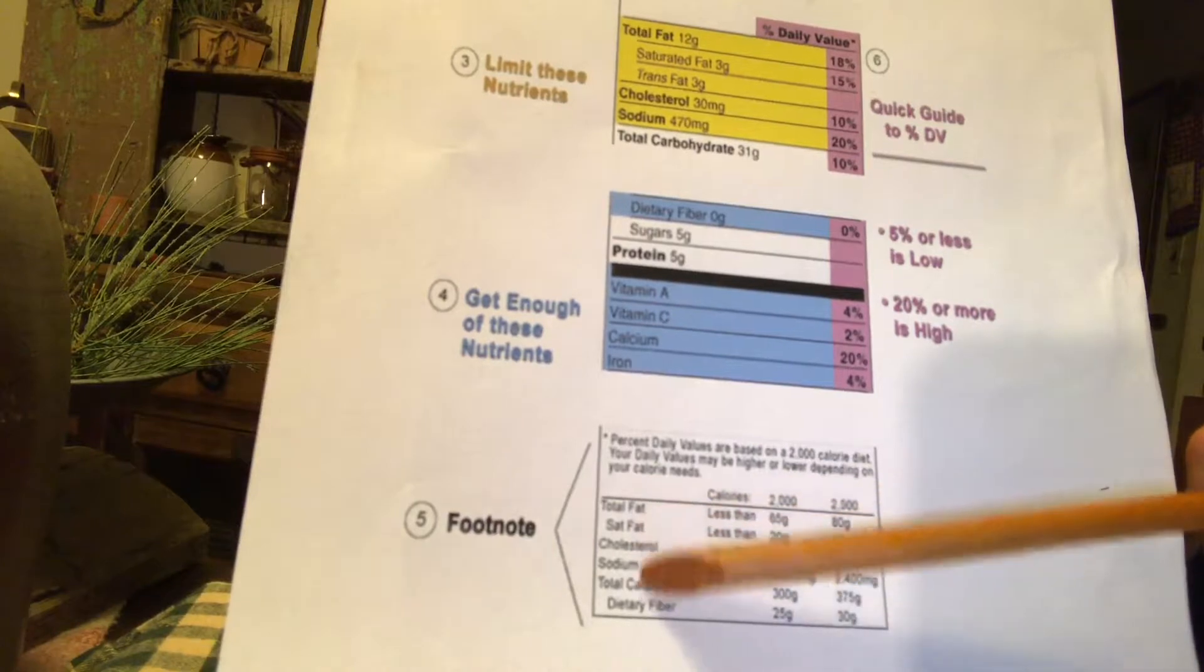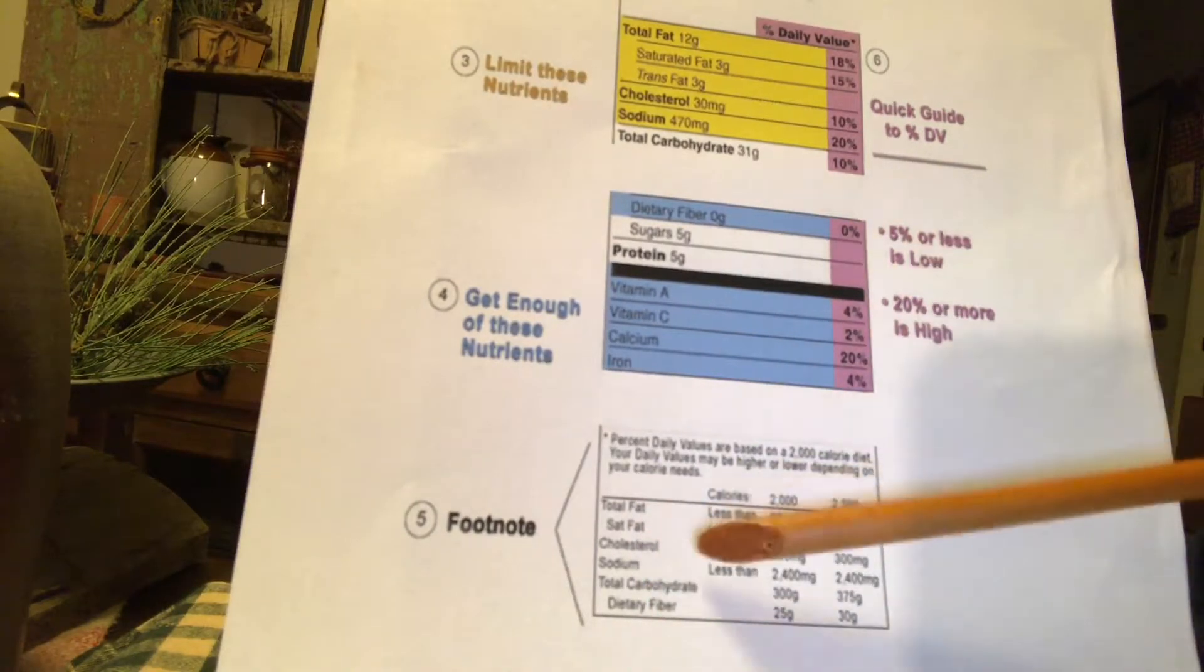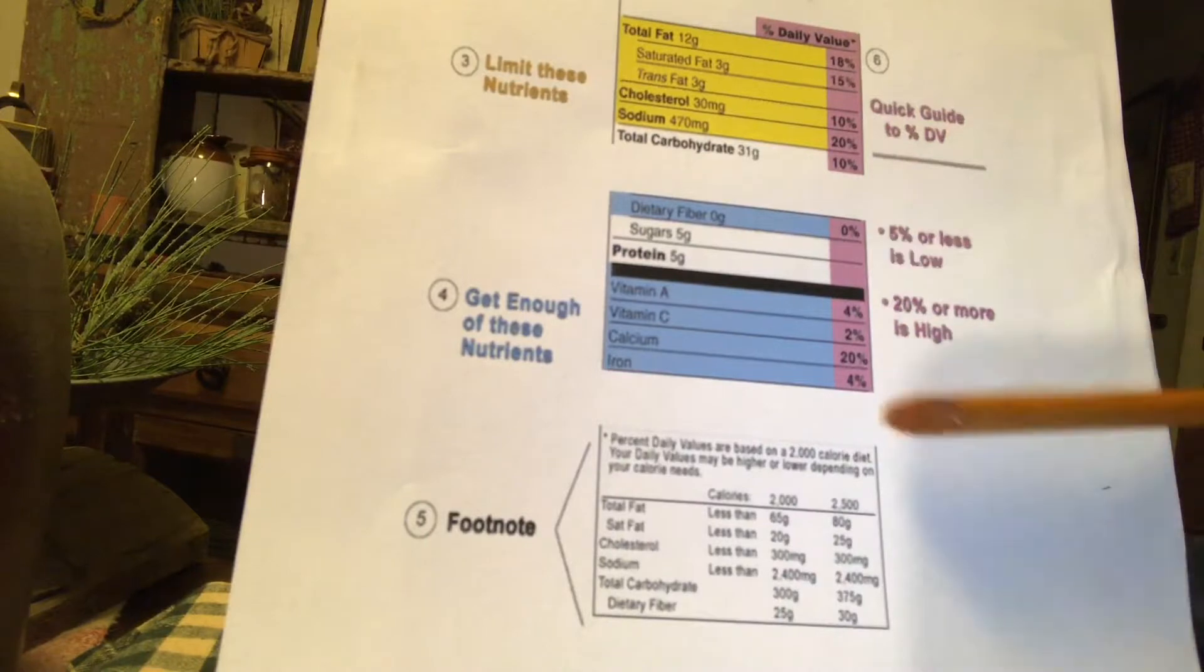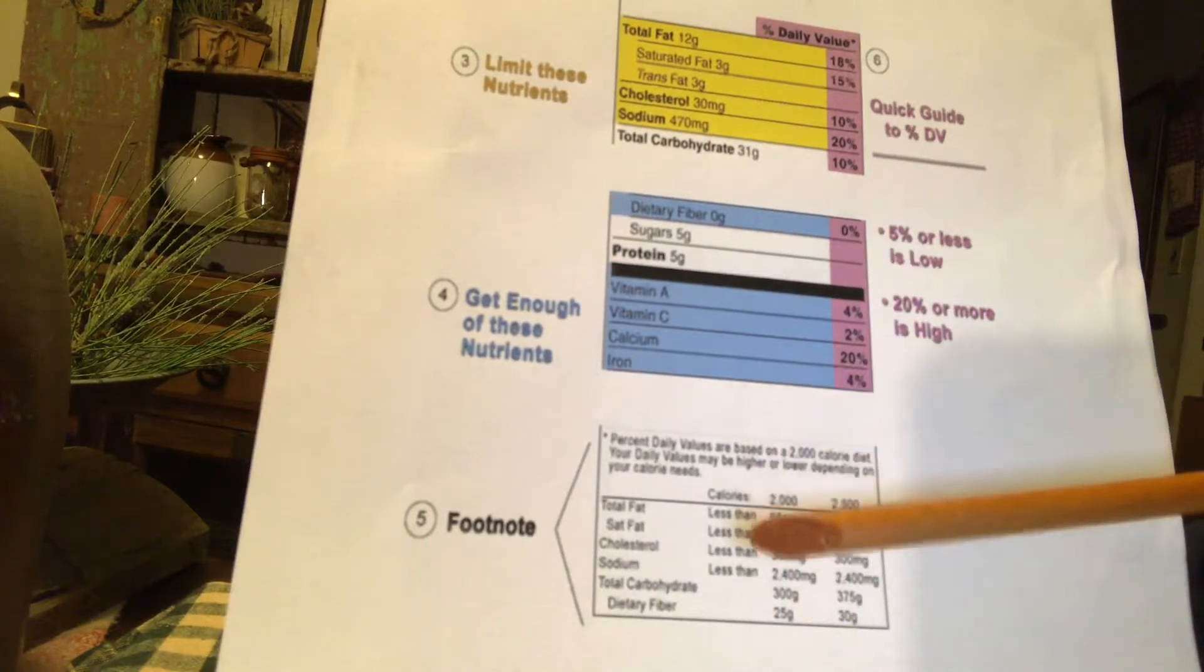This is just saying that it's about percentage of daily values for a diet based on 2,000 calories, and so on and on and on. But, however, it's down below here gives, it's a guideline. This is a guideline, and this is a guideline.